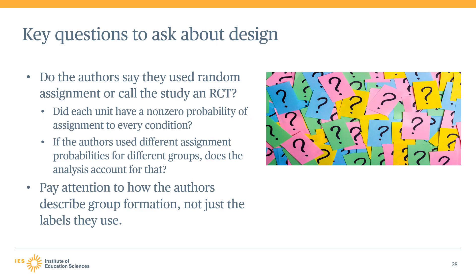WWC reviewers can ask themselves some key questions when reviewing group design studies and assessing assignment conditions. The first question is: do the authors say they used random assignment or call the study an RCT? If yes, reviewers should check whether each unit had a non-zero probability of assignment to each condition, and whether the authors use different assignment probabilities for different groups, and if so, whether the analysis accounts for that. Paying close attention to how authors describe group formation will help determine if the study had well-executed random assignment, compromised random assignment, or is a QED.